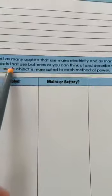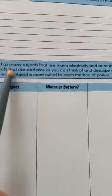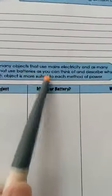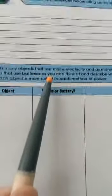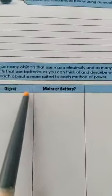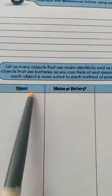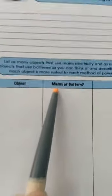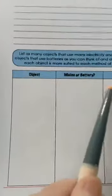You can look around and write down as many objects as you can that use mains electricity and ones that use batteries. Write down the object, whether it's mains or battery, and why you think so.